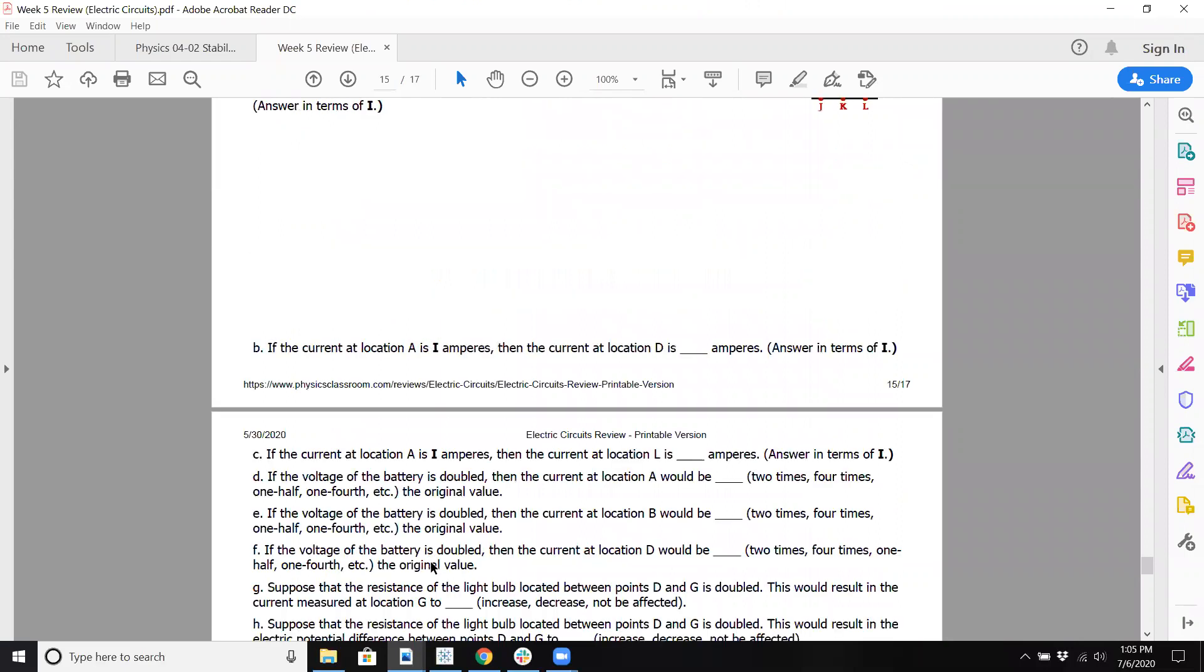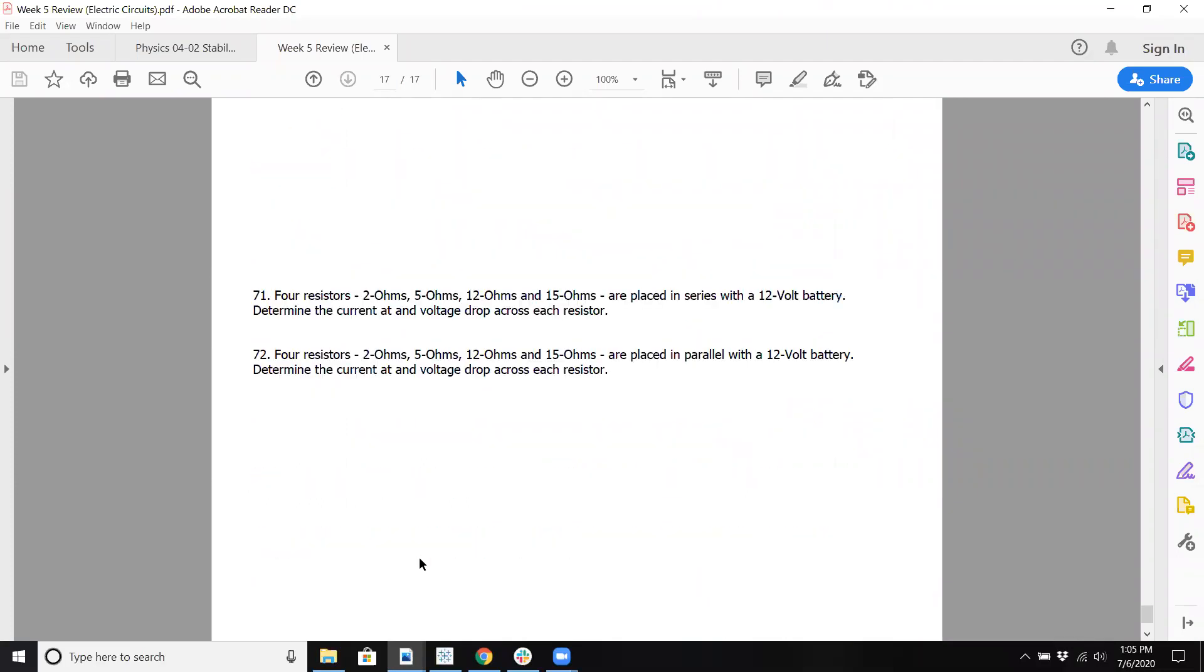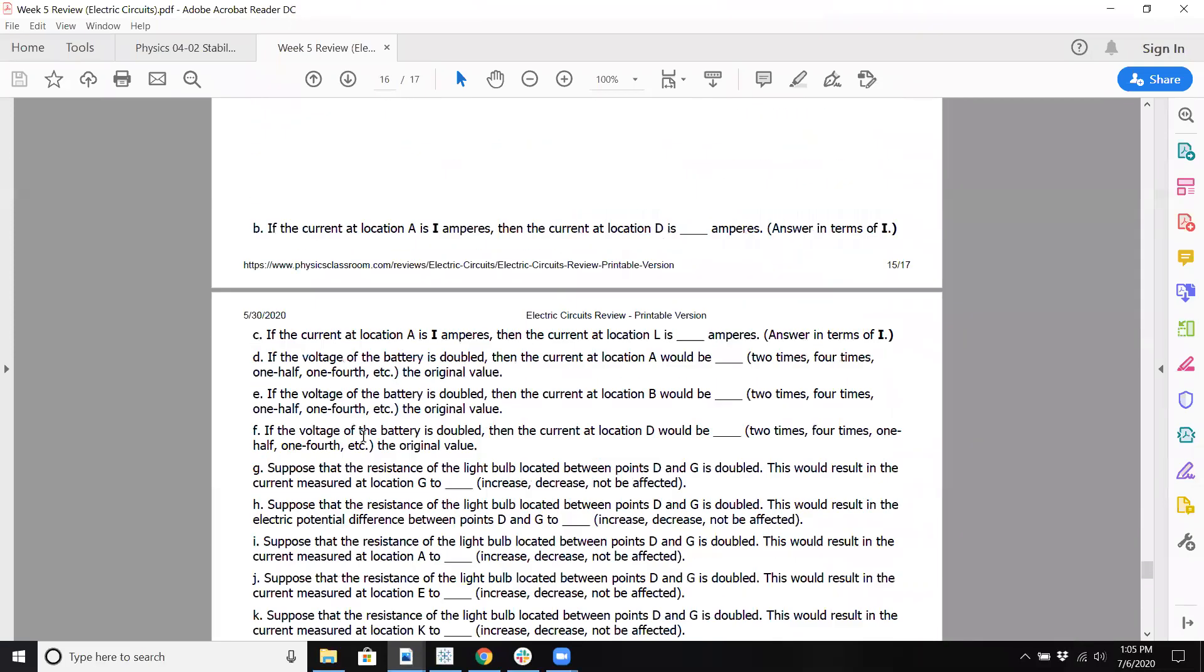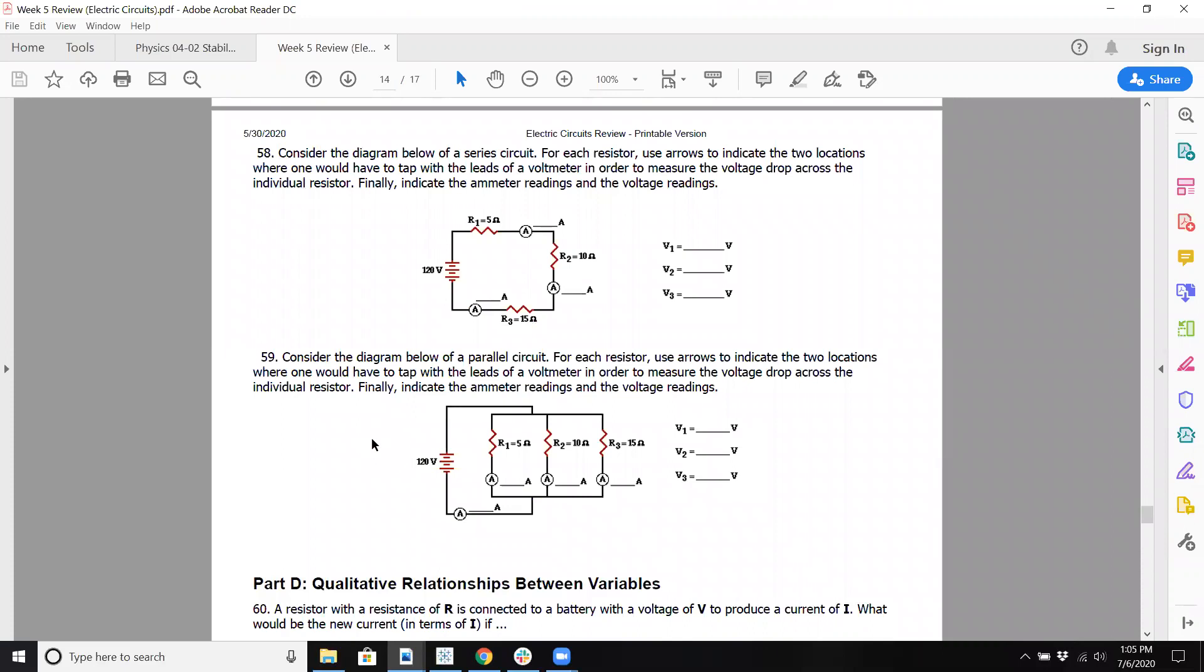71 is a good one as well as 72. So let me work out 58, 59, then have you guys do 71, 72. So 58 and 59. This is something we'll definitely have on our test. Something like these problems here. You're considered a diagram below the series circuit. I just care about this part.